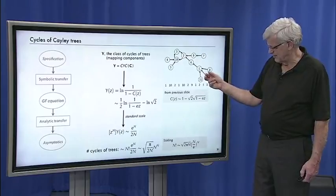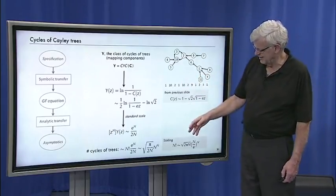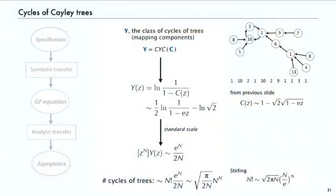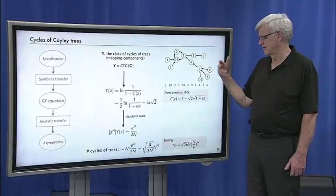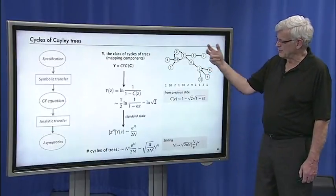Or another way to look at that is to apply Sterling's formula, get √(π/(2n))·n^n. And there's two different expressions for that. That's factoring in the n! to get the number of different mapping components of size n. So that's cycles of trees.